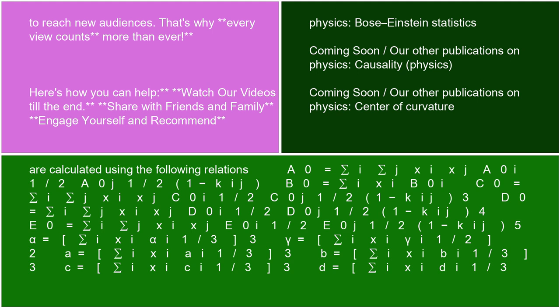5α = Σᵢ xᵢαᵢ^(1/3); 3γ = Σᵢ xᵢγᵢ^(1/2); 2a = Σᵢ xᵢaᵢ^(1/3); 3b = Σᵢ xᵢbᵢ^(1/3); 3c = Σᵢ xᵢcᵢ^(1/3); 3d = Σᵢ xᵢdᵢ^(1/3).